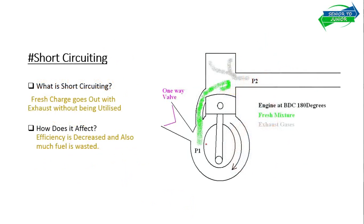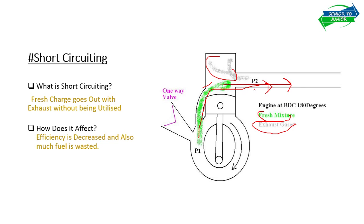The next disadvantage is short circuiting. Short circuiting is a phenomenon in which fresh charge, without participating in the combustion process, without doing any work or mixing in the combustion chamber, just goes straight out of the cylinder. You can see the fresh mixture indicated in green and exhaust in pink — these two are separate, and the fresh mixture exits without being utilized. It comes out as black smoke and particulate matter in diesel engines, causing pollution, fuel wastage, and decreased efficiency.